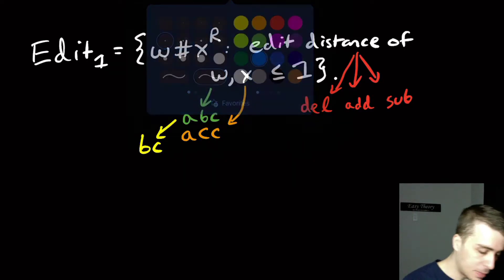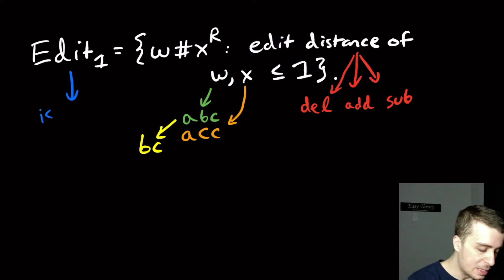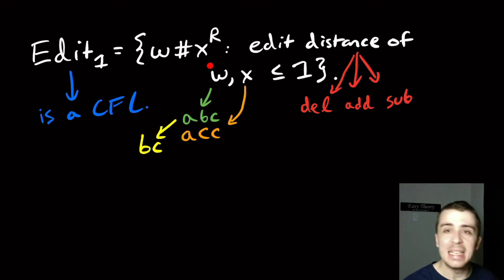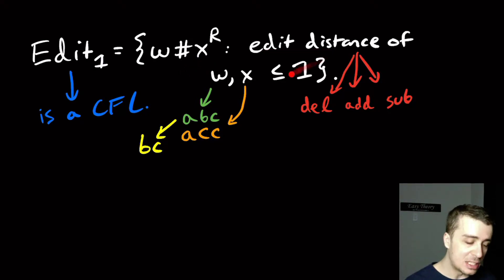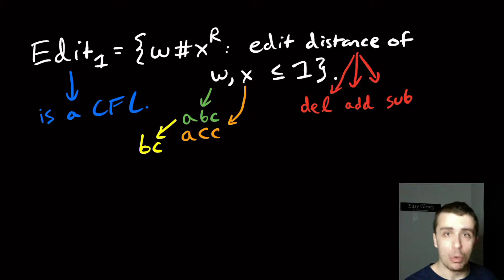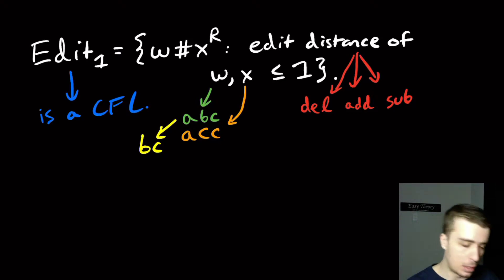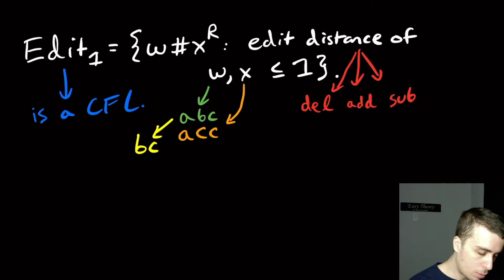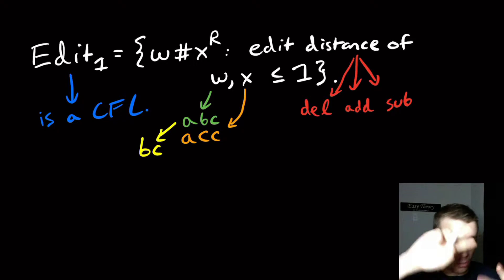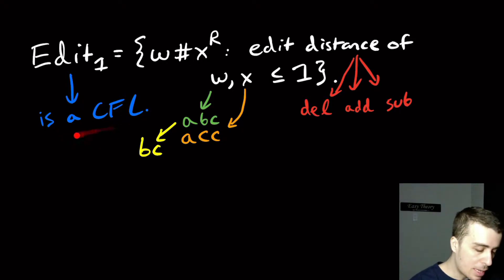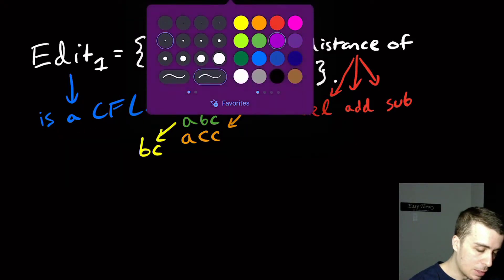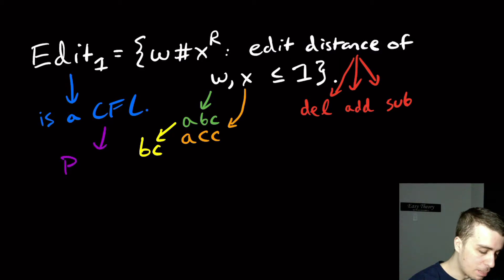What I want to show is that Edit One is a context-free language. You can pretty easily show it's not regular — even for edit distance zero it's not regular, because you'd need the string to be the reverse of the other side, which isn't regular. So I want to show it's context-free, and the way I'll do that is with a PDA, because it's easier to think about that way.